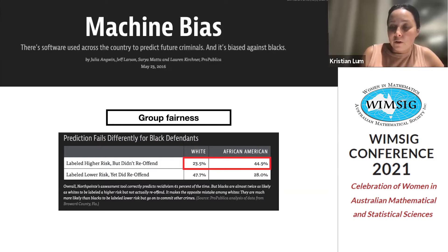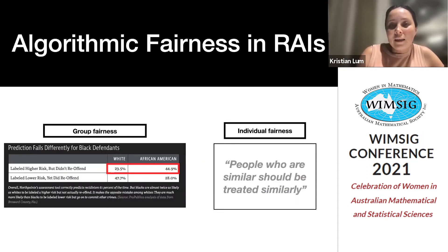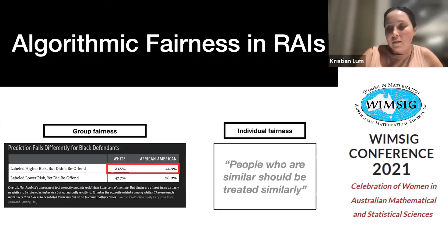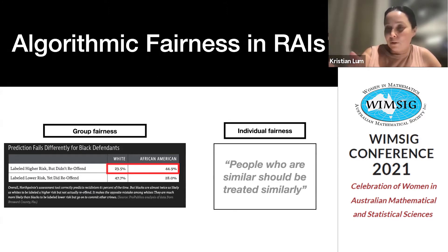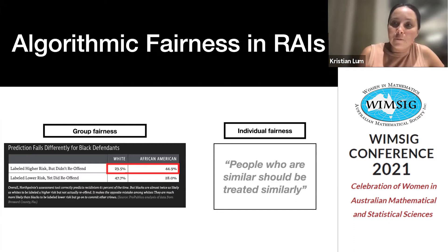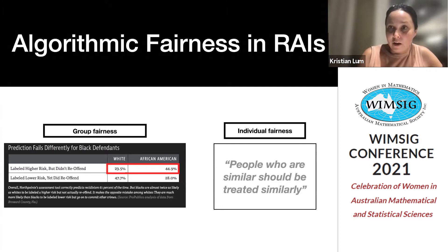Group fairness asks: if the model is performing similarly for people within those groups, is it fair? An alternative notion that's been very popular is individual fairness — essentially, people who are similar should be treated similarly. Defining 'similar' is the crux of the matter. It might be tempting to say people whose covariates have a small Euclidean distance should have similar predictions, but the idea is more of a qualitative evaluation. Methods for both group and individual fairness have been applied specifically to risk assessment models.